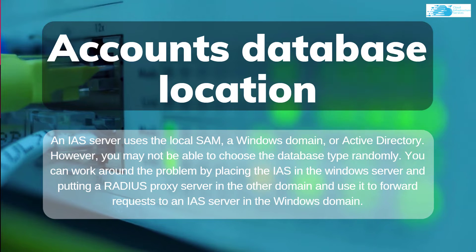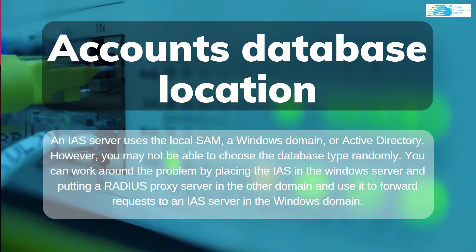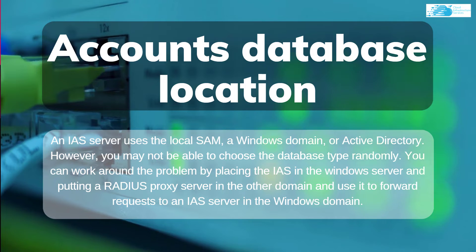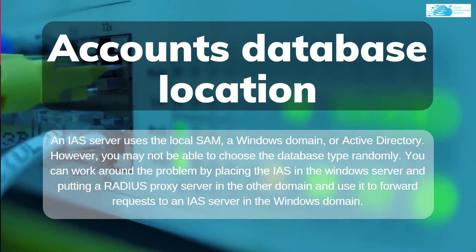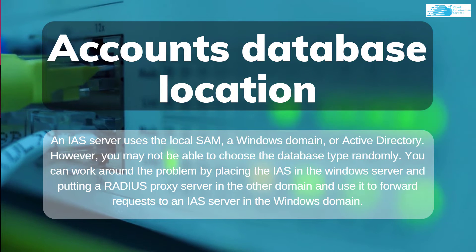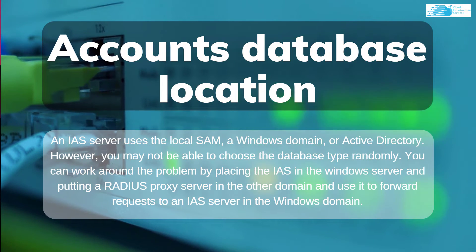The next practice concerns the accounts database location. An IAS server uses the local SAM, a Windows domain, or Active Directory. You may not be able to choose the database type randomly. A workaround is to place the IAS in the Windows server and put a RADIUS proxy server in the other domain, using it to forward requests to the IAS server in the Windows domain.